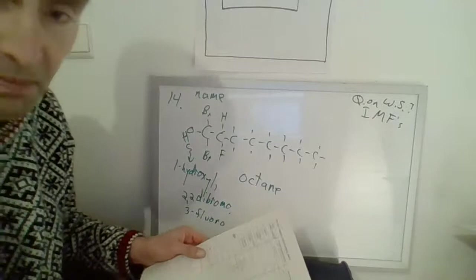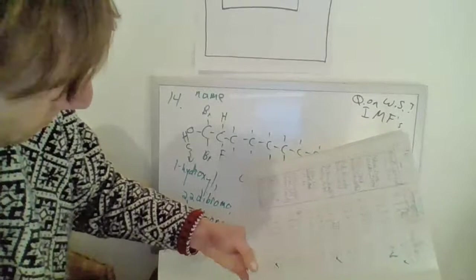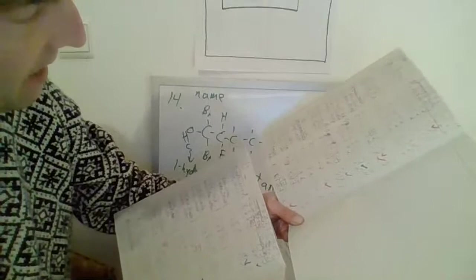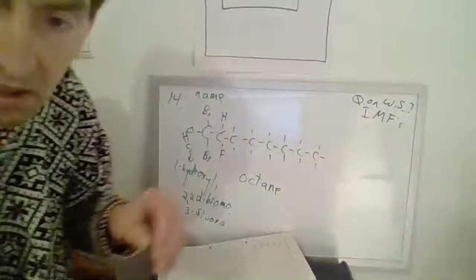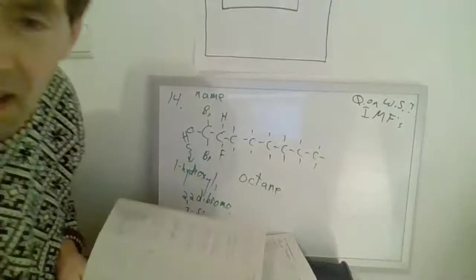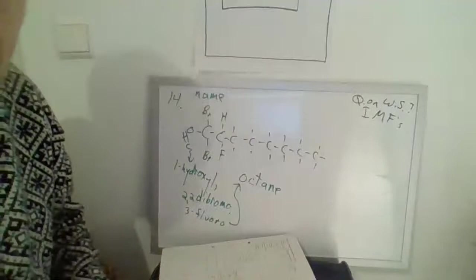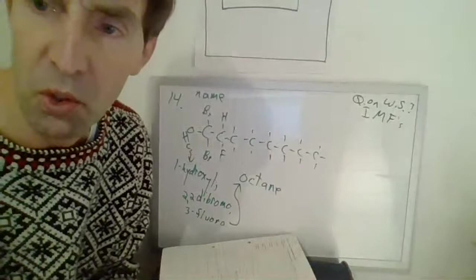Then we've got to tell where some branches are. We've got a lot of branches, right? So we've got a one-hydroxyl. That's the OH, isn't it? It's the one-hydroxyl. Then I've got a two-comma-two-di-bromo-comma. Then I've got a three-fluoro-octane. I think that's it. Charlotte, I think it was you that asked that. Does that help? One-hydroxyl, two-two-di-bromo-three-fluoro-octane for number 14.